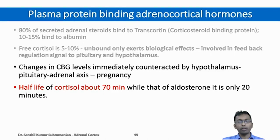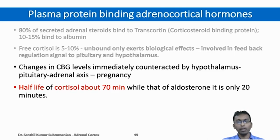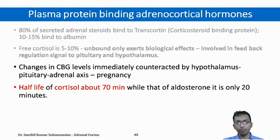Plasma protein binding helps to increase the half-life of the hormones, protecting them from metabolism and excretion through the kidney. If the hormone is bound more to protein, the half-life increases. If the bound form is very less, then the half-life will be less. The protein binding of aldosterone is less, hence its half-life is only 20 minutes compared to 70 minutes for cortisol.